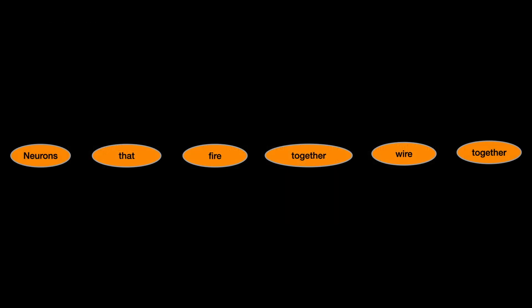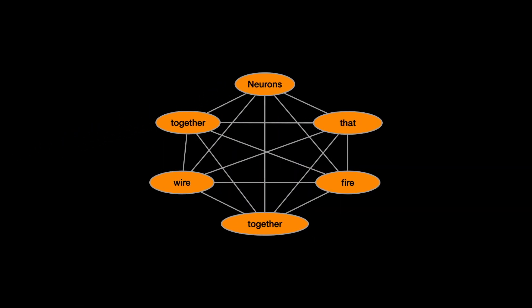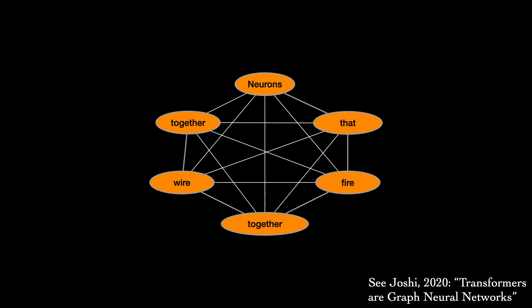There's a nice connection between transformers and graph neural networks, or GNNs. If you've seen them before, you may realize that we can view transformers as a kind of GNN that treats sequences as fully connected graphs. The transformer allows all nodes to preferentially communicate during message passing, according to the attention weights.